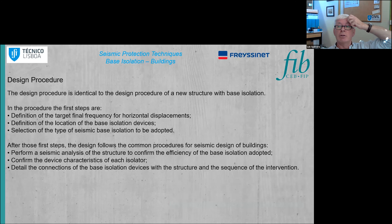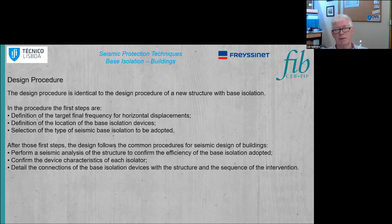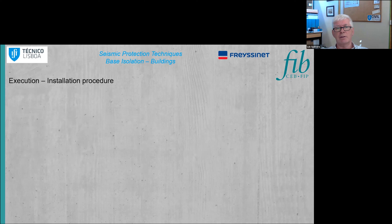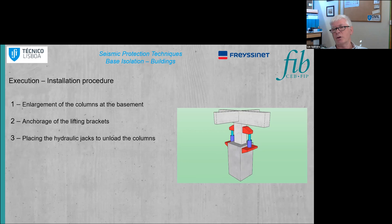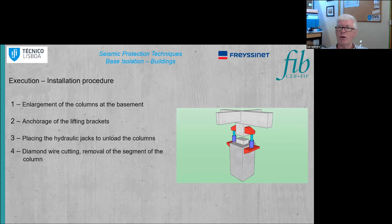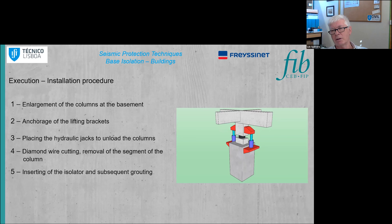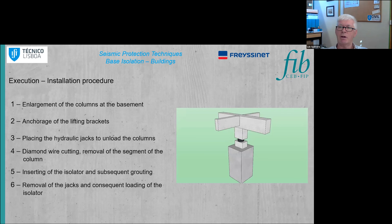The design procedure is similar to that of a regular base-isolated structure. To summarize the installation procedure: first, the column is enlarged to provide a base for force transfer; then lifting brackets are installed and jacks support the vertical loads; the existing column is cut to create space for the bearing; the bearing is inserted and grouted to ensure perfect vertical force transmission; finally the jacks are released, resulting in the final isolated configuration.